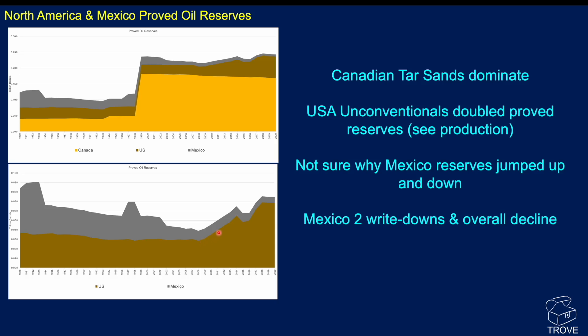Then all of a sudden the reserves really start to pick up from around 2008. That's due to unconventionals — fracking and shale. It's effectively doubled their proved reserves. A fantastic success story. On the other hand, Mexico has essentially been in decline — reserves have declined significantly, getting thinner and thinner through time.